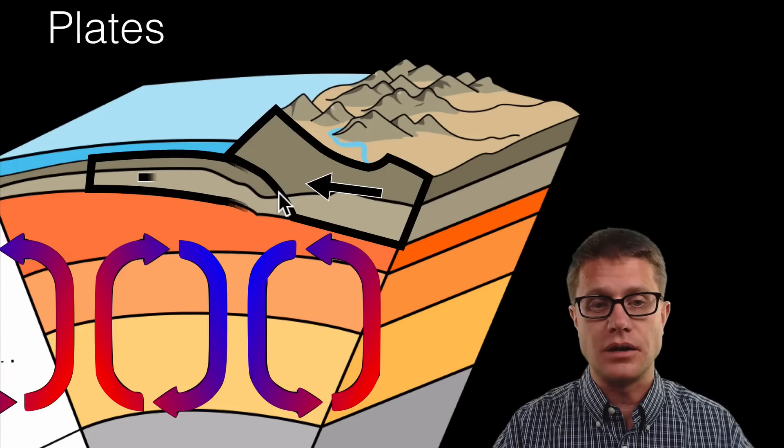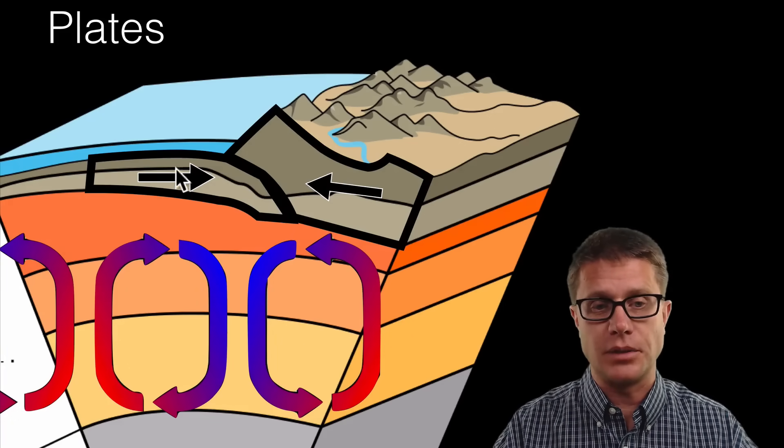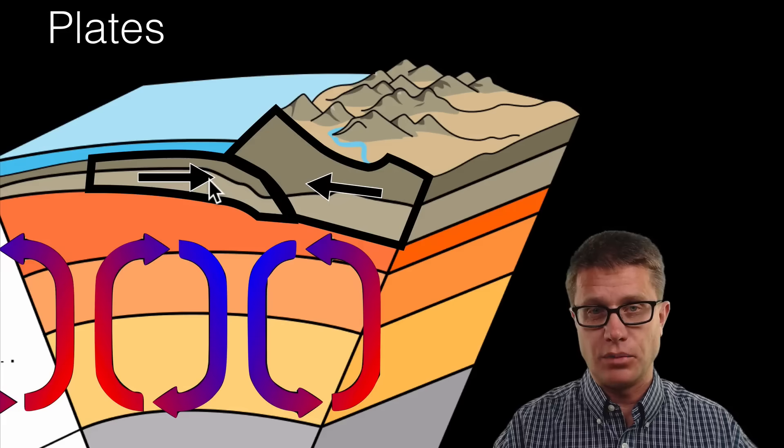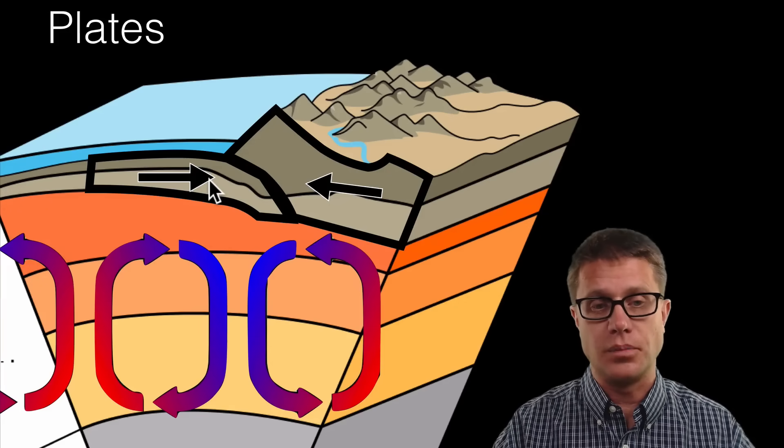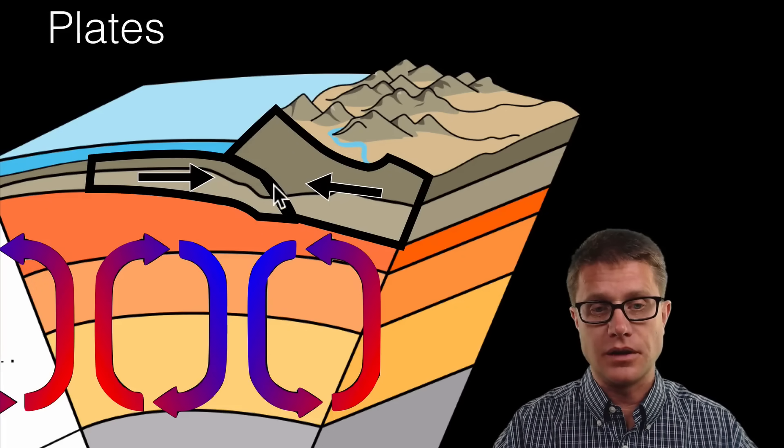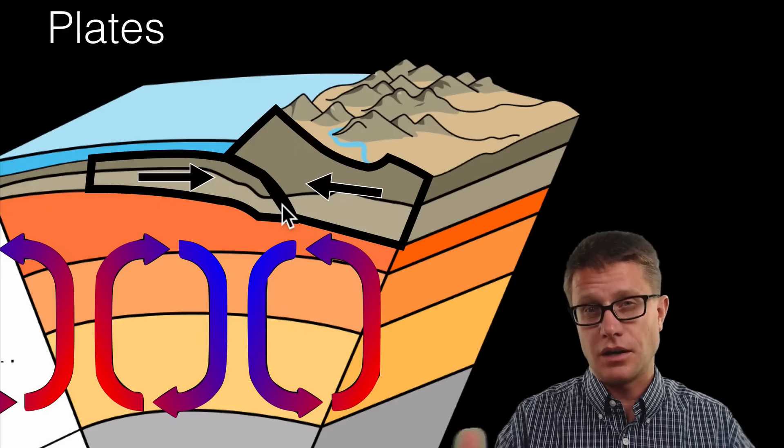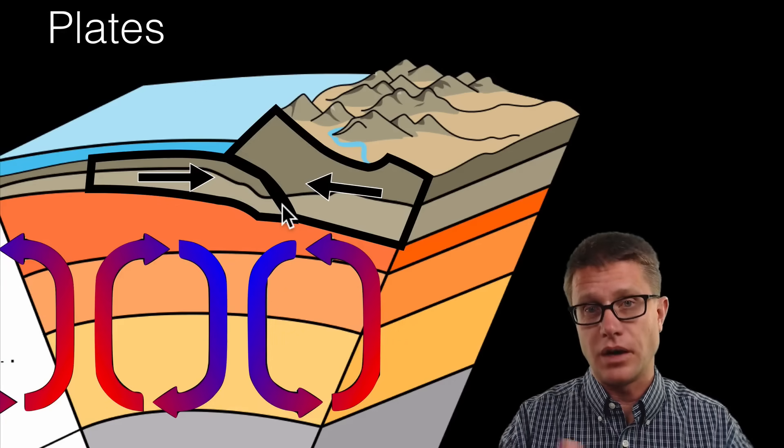And it is running into another plate. So we have an oceanic plate. Oceanic plates are going to be more dense and they will be pushed underneath a continental plate. And what we are going to get right along this margin is going to be a convergent plate boundary. They are running into each other.